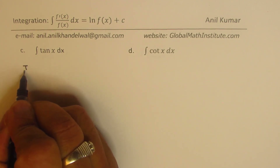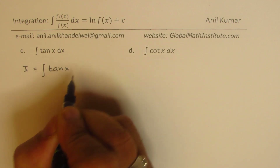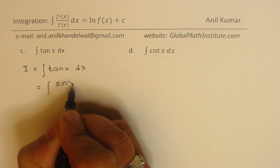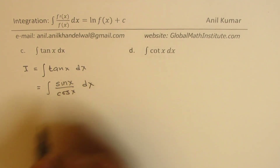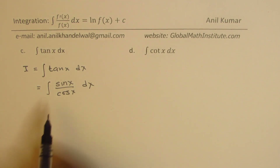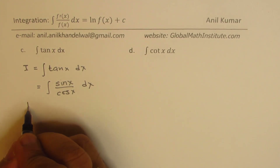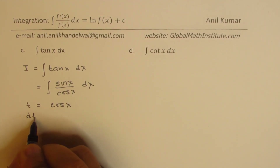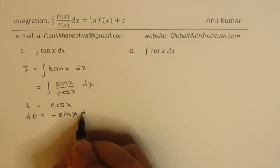We can write the integral of tan x dx in terms of sine and cosine: tan x = sin x / cos x. The beauty is that the derivative of cos x is −sin x — they are related. So we let t = cos x, and dt = −sin x dx.